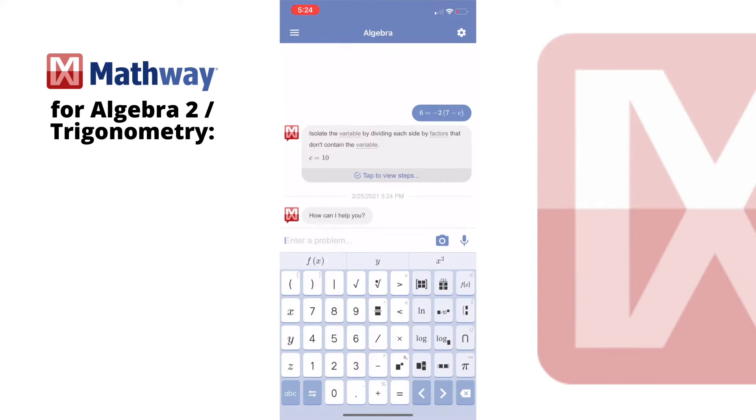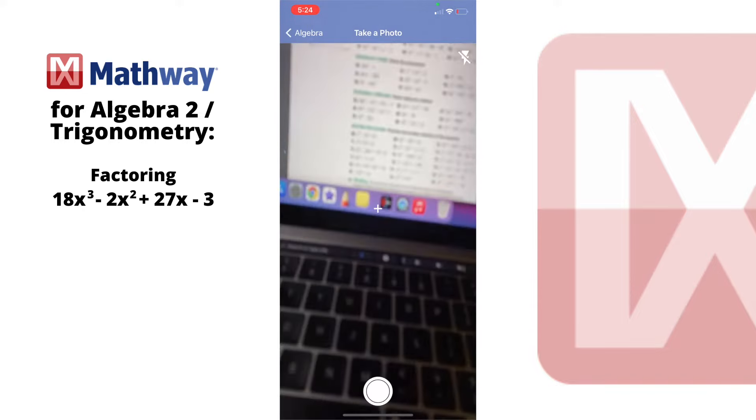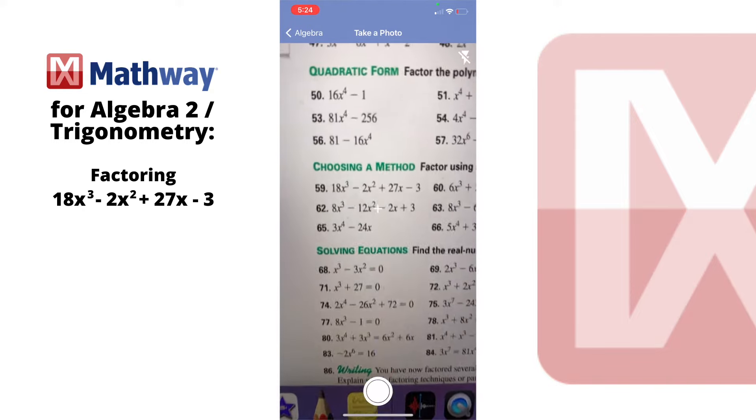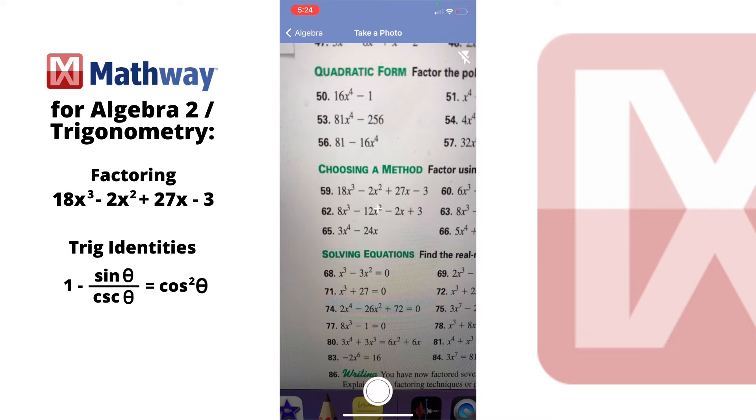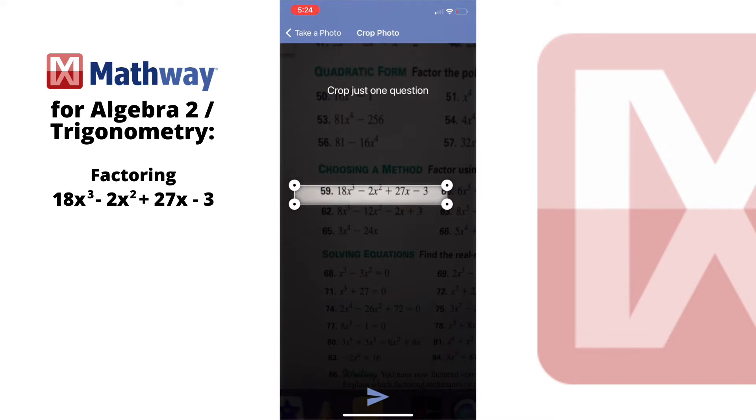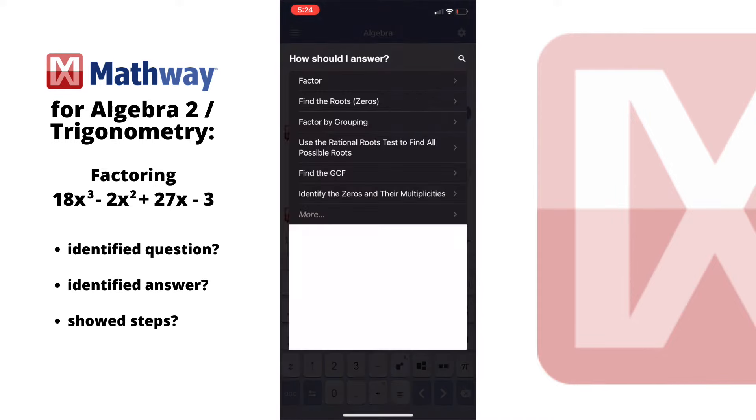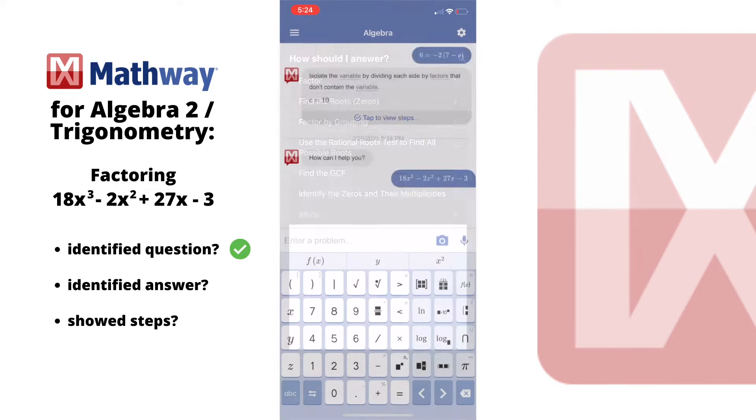For Algebra 2 and Trig, I wanted to test out a factoring problem and then also one about Trig identities. I chose a problem where you're supposed to factor this expression using the factor by grouping method. I think it's kind of cool how it asks you what you want to do with the problem. You can choose to factor, find the roots, factor by grouping. That's the one that we want. And all of these other possibilities, so it makes me confident that it can do these problems.